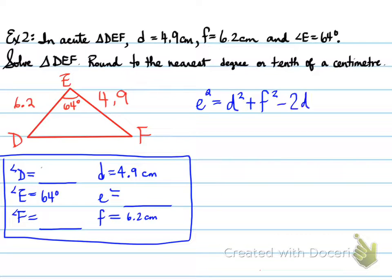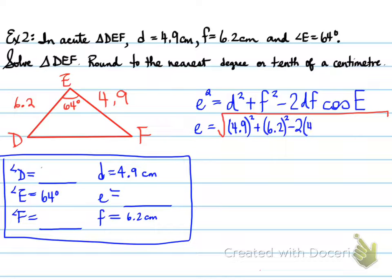So we're going to solve for E first. E squared is equal to D squared plus F squared minus 2DF cos E, and we take E is equal to the square root of those values. 4.9 squared plus 6.2 squared minus 2 times 4.9 times 6.2 cosine 64, and we get that E is equal to 5.9845.